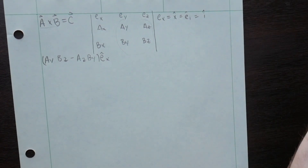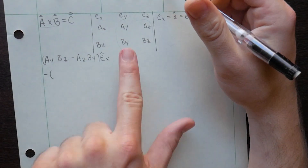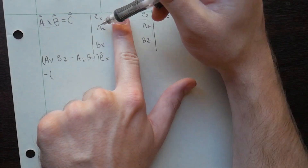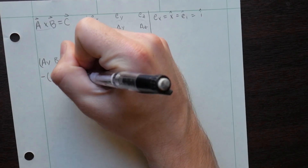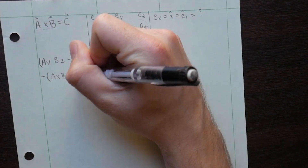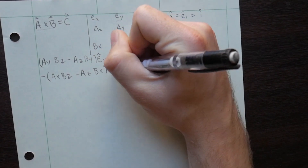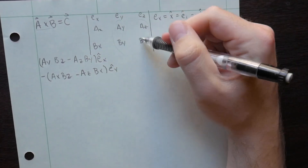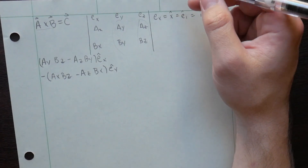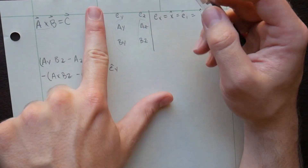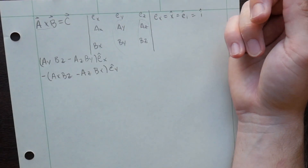I also know that there's a minus sign that comes up for the next one, and I cover up the column and the row, and I get A_x·B_z minus A_z·B_x. That's going to be my E_y component, and so on for E_z. And that works — you get the right answer — but there's memorization of knowing what to cover up, and then you tack on a minus sign, and it's a little weird.